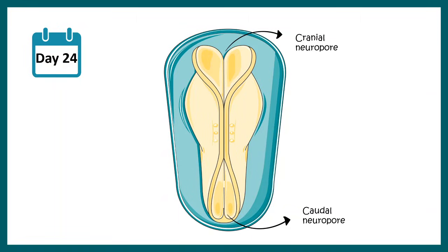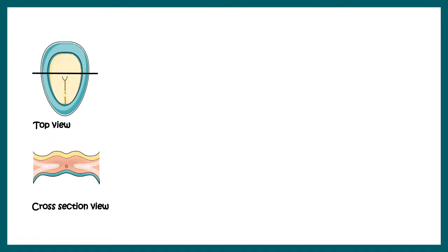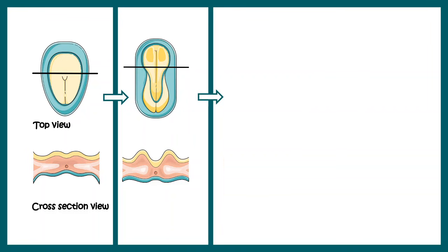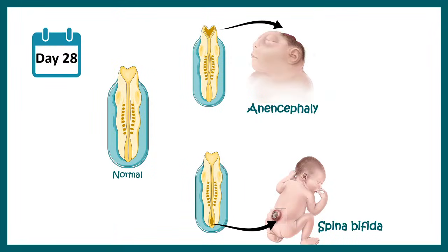By day 24, the middle portion of the neural tube is already folded and fused, but the cranial and caudal ends are not yet fused — these open ends are called the cranial neuropore and caudal neuropore. By day 26 to 28, both openings must be completely closed. If they are not — especially if the cranial end doesn't fuse — it may lead to anencephaly; if the caudal end doesn't fuse, it may lead to spina bifida.